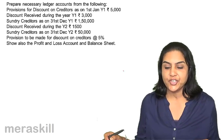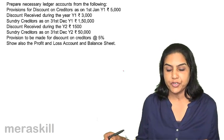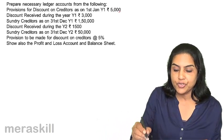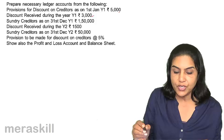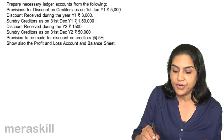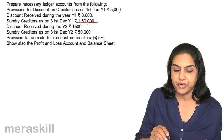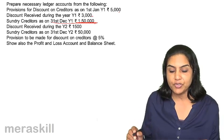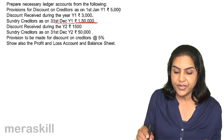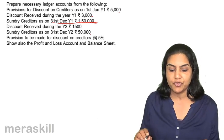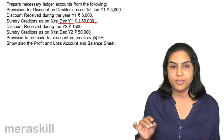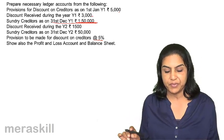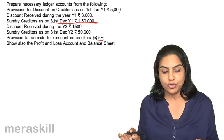Prepare necessary ledger accounts from the following data. Provision for discount on creditors on 1st January was 5000. Discount received during Year 1 is 3000 and creditors as on 31st December Year 1 is 150,000. Discount received during Year 2 is 1500, sundry creditors as on 31st December Year 2 is 50,000, and they have a policy of making a provision for discount on creditors at the rate of 5%.